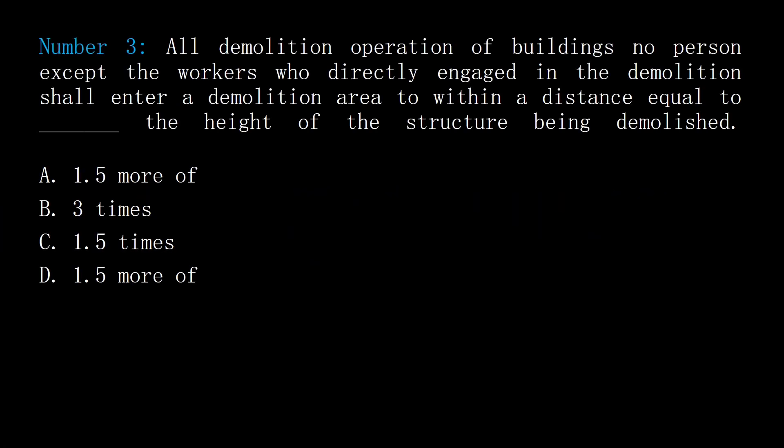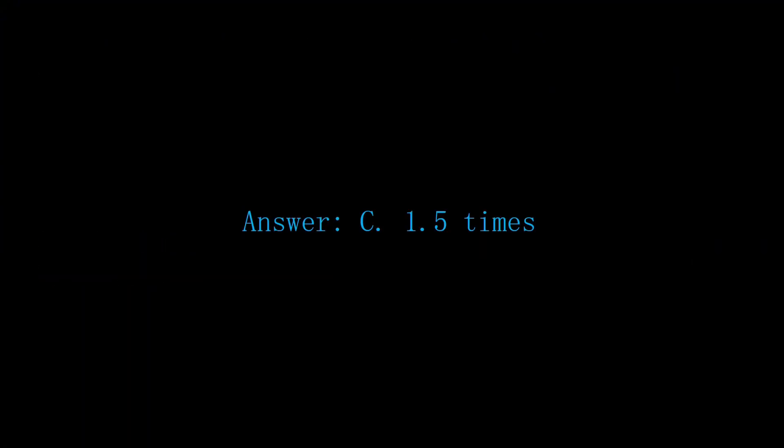Number 3. In all demolition operations of buildings, no person except the workers who are directly engaged in the demolition shall enter a demolition area to within a distance equal to blank times the height of the structure being demolished. A: 1.5 more of. B: 3 times. C: 1.5 times. D: 1.5 more of. Answer: C, 1.5 times.